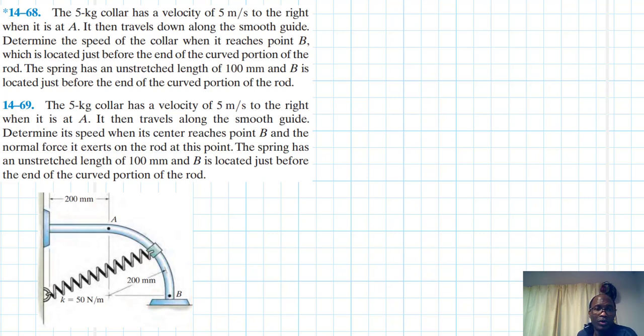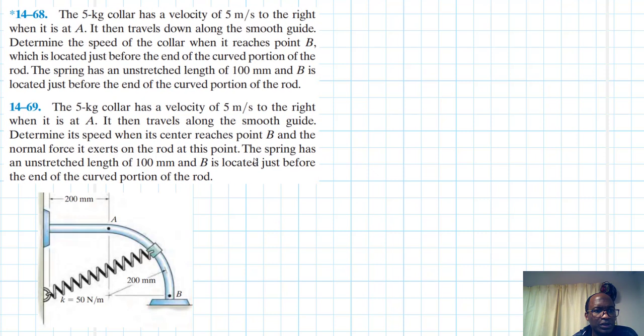Hello, I welcome you all. The problem reads: the 5 kg collar has a velocity of five meters per second to the right when it is at point A. It then travels down along the smooth guide, and by smooth you mean there's no friction. Determine the speed of the collar when it reaches point B, which is located just before the end of the curved portion of the road.